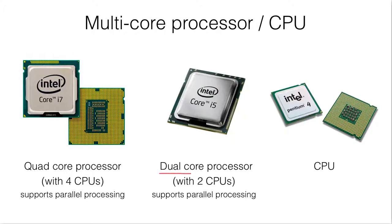For example, this is a dual core processor — a processor can have two CPUs, and the two CPUs can work together to process a single program. That means it can support parallel processing.